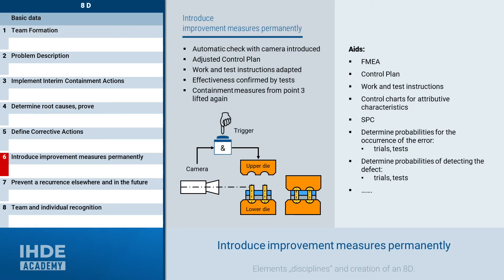The previously defined improvement measures must be introduced permanently and their effectiveness must be proven. For the permanent implementation, our case study includes introducing the automatic camera check. The control plan and the work and test instructions must also be updated. The effectiveness of the introduced improvement measures must then be confirmed by tests, after which the containment measures from point 3 can be lifted again.